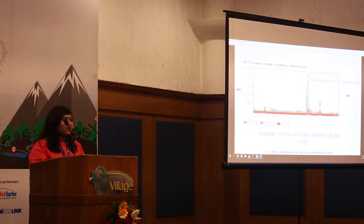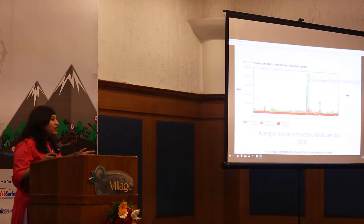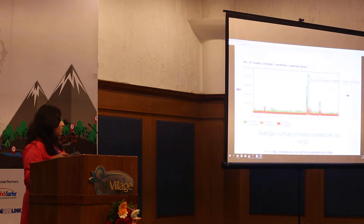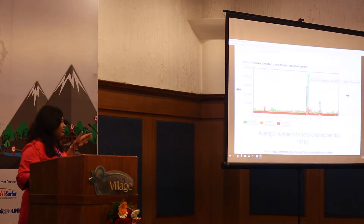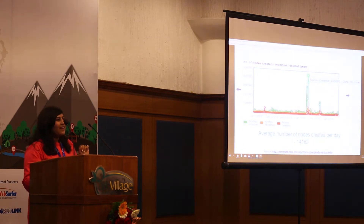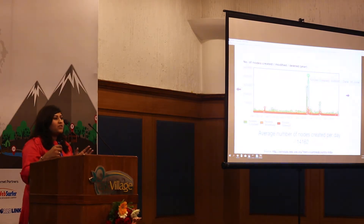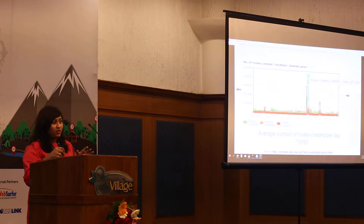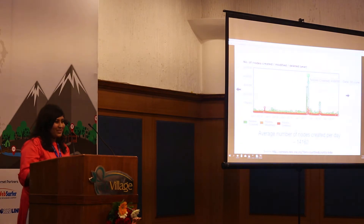Starting with some basic statistics: on average, 14,000 nodes have been created on a daily basis. There's a spike on the 30th of June 2015. I did try searching for the activities which led to the spike, and we realized that Zipper, which is one of the average location providers in India, had started mapping buildings in India. I'll come to the slide on how many buildings they've mapped — but this was the reason for the spike.